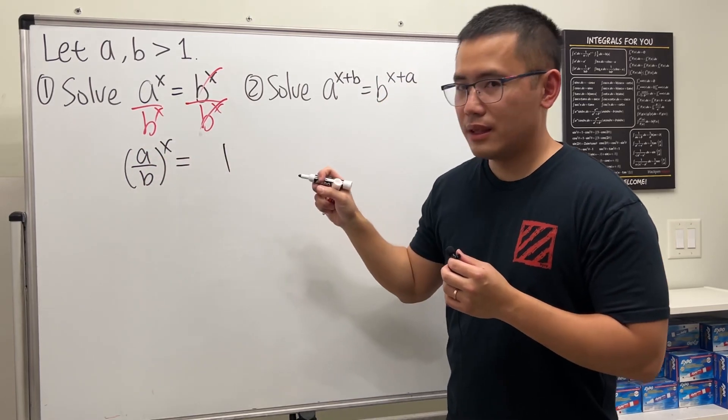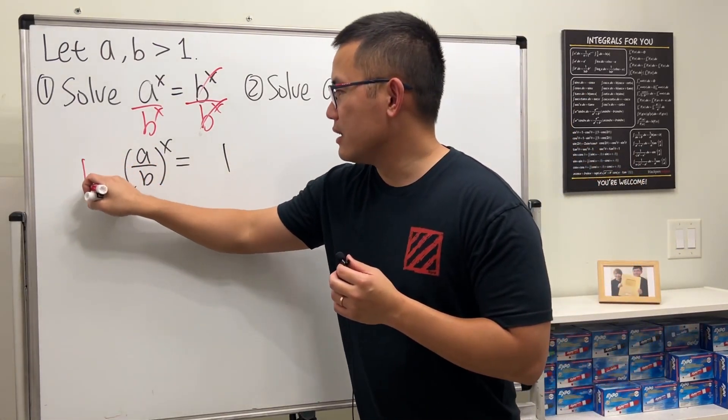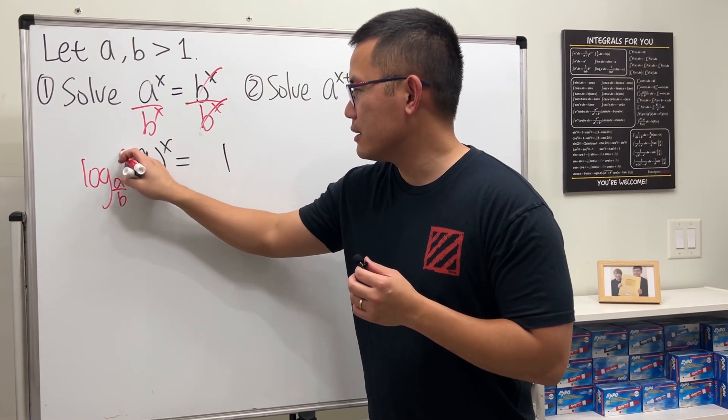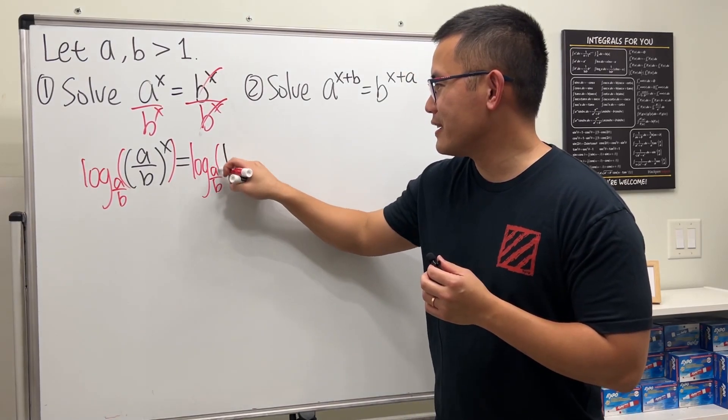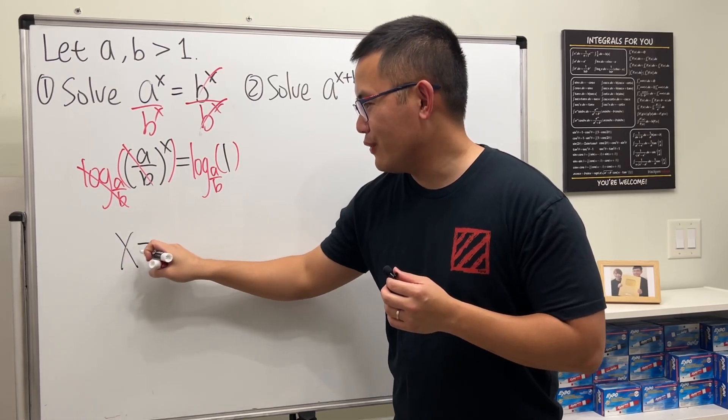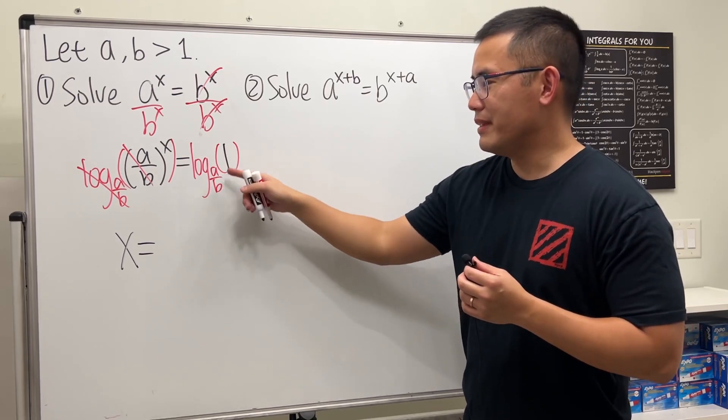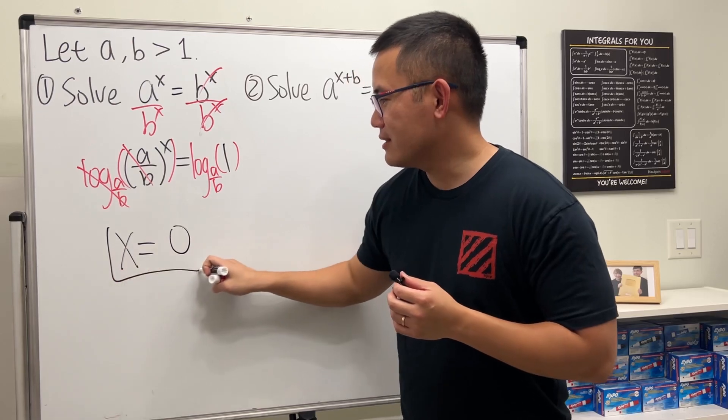Then to get rid of this base we can take logarithm. Let's take log with base a/b here. This and that cancel, we just get x by itself. And log base a/b of one is just equal to zero, so x equals zero and we are done.